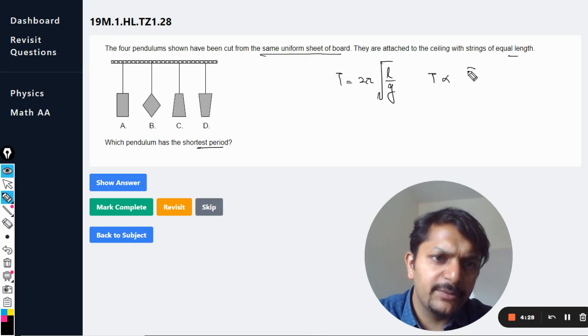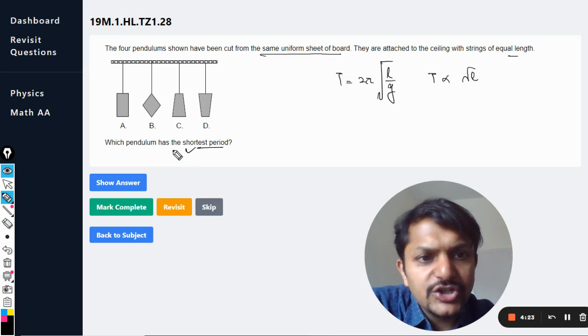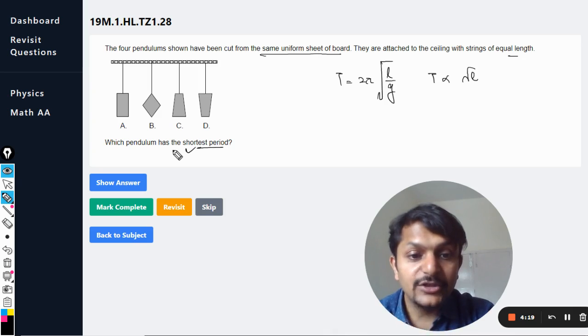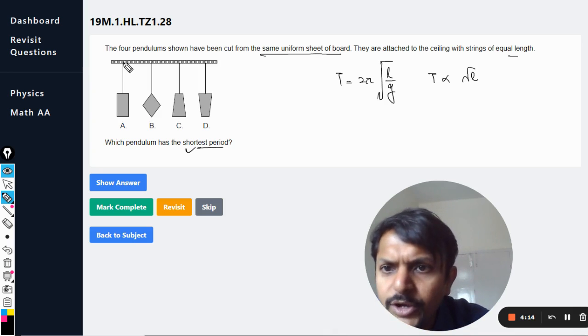Time period is directly proportional to square root of l. So we want to find the shortest time period, which means the shortest length will have the shortest time period. The length of the string is the same, so what does it mean by the length of the pendulum? It means we are going to measure the length from the top to the center of mass.